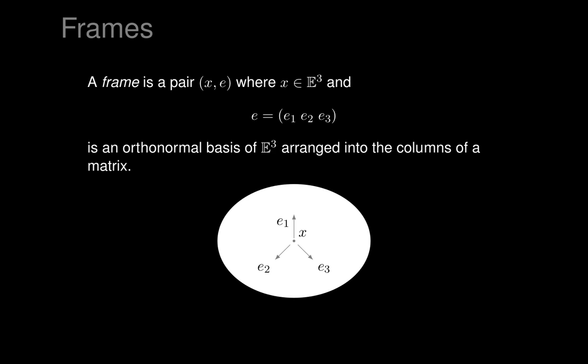A frame is a pair, X and E. X is a point of Euclidean three-dimensional space, and E is a triple of vectors E1, E2, and E3 — an orthonormal basis of Euclidean space. We think of them as column vectors arranged into the columns of a matrix called E. A frame consists of a point and then three vectors which form an orthonormal basis coming out of that point. Any orthonormal basis can occur in a frame.